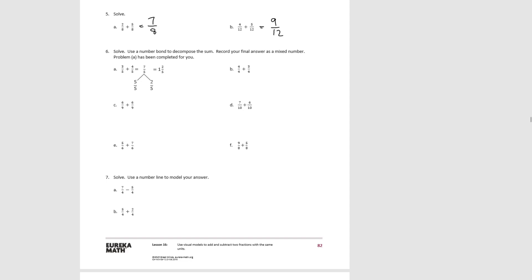For number 6, we'll do the same as with subtraction: if our sum is greater than 1, we'll decompose it and rewrite it as a mixed number. The first one's done for you: 2 fifths plus 4 fifths is 7 fifths, which decomposes into 5 fifths and 2 fifths, written as the mixed number 1 and 2 fifths. For B, our unit is fourths: 4 plus 3 more is 7. That decomposes into 4 fourths and 3 fourths, which equals 1 and 3 fourths.